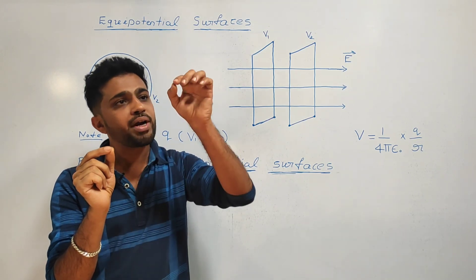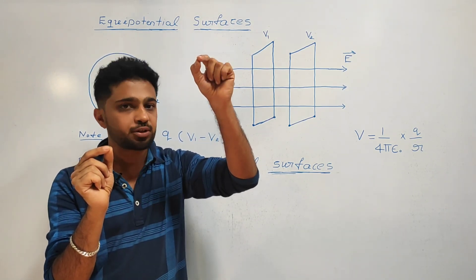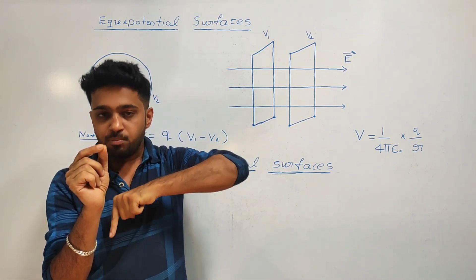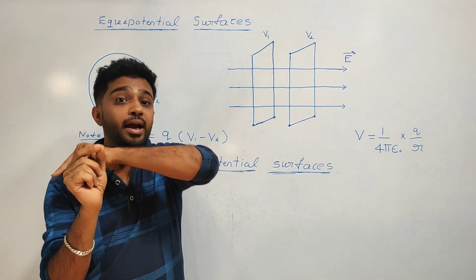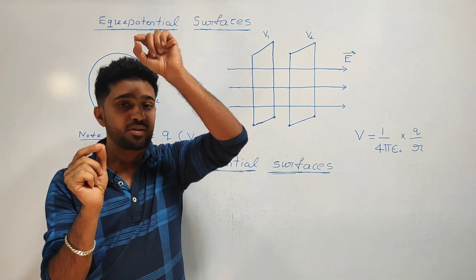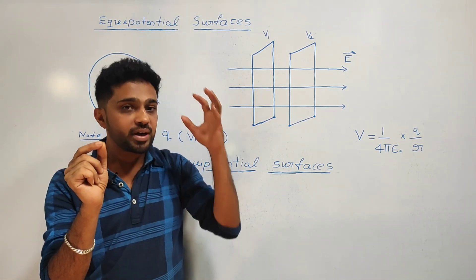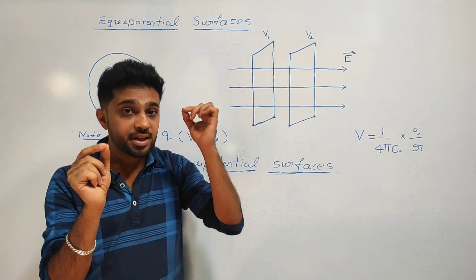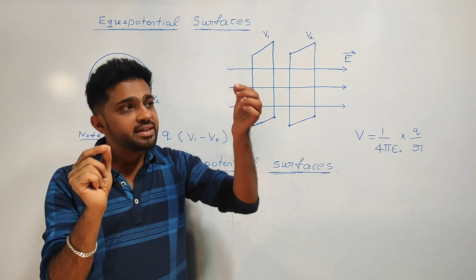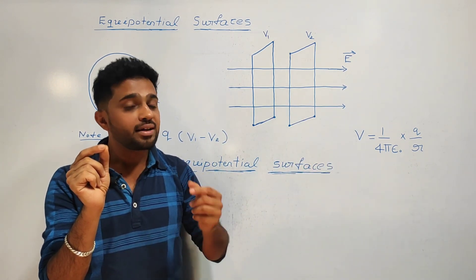Now we are taking the electrostatic potential at 0.8 meters. We calculate the electrostatic potential and we find the same surface — that is the equipotential surface.